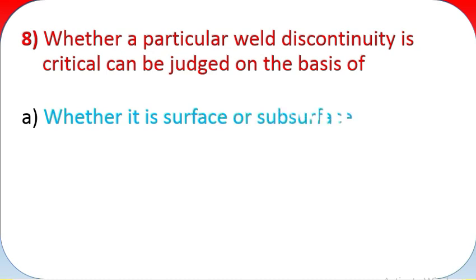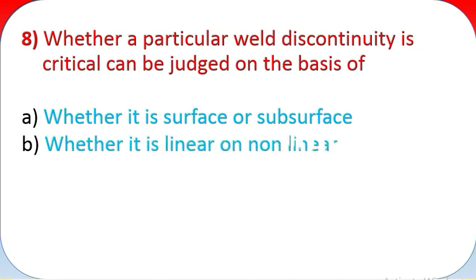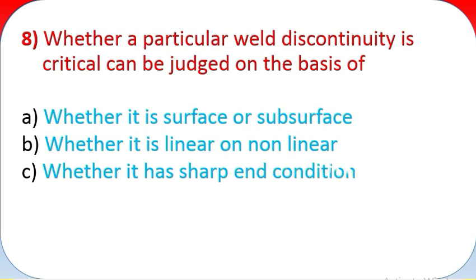Question 8: Whether a particular weld discontinuity is critical can be judged on the basis of: A - Whether it is surface or subsurface. B - Whether it is linear or non-linear. C - Whether it has sharp end condition. D - All of the above. E - None of the above.